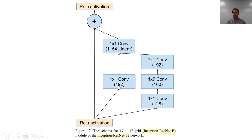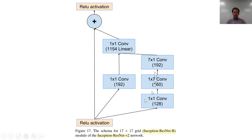A one-by-one conv is a really good way to either reduce or increase the dimensionality of an input without changing the grid size. So here we've got a one-by-one conv, then another one-by-one conv, and then they're added together. And then there's a third path that's not added — it's concatenated. There is a form of ResNet which is basically identical to ResNet, but we don't do plus, we do concat, and that's called a DenseNet.